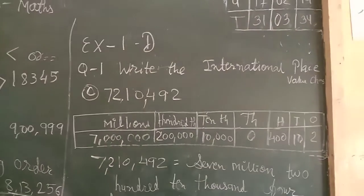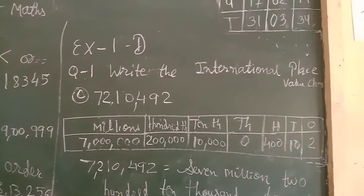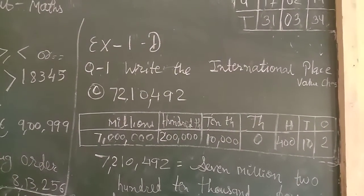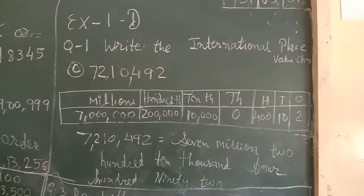Exercise 1-D: Write the international place value. See numbers here, making the chart.